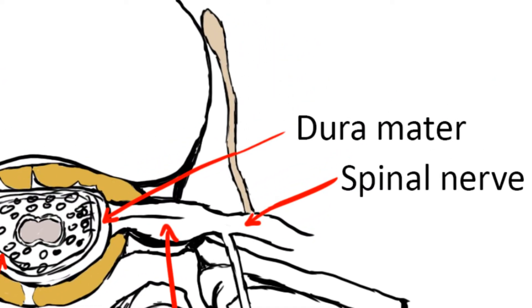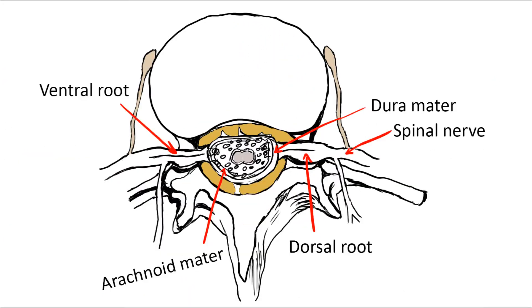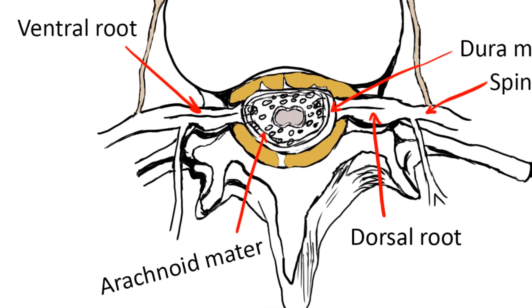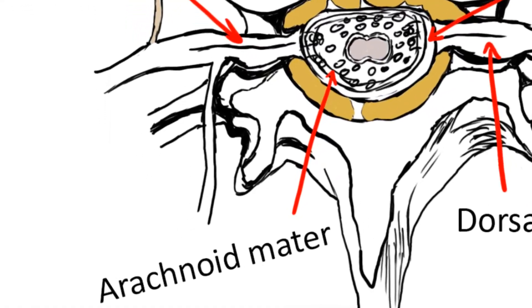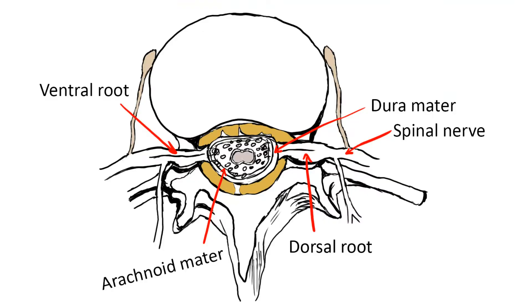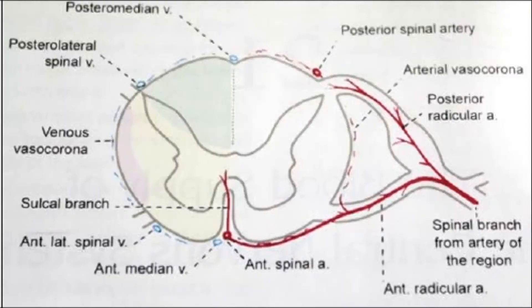The layers of the spinal cord include the dura mater, the arachnoid mater, and the pia mater. The subarachnoid space contains the cerebrospinal fluid.